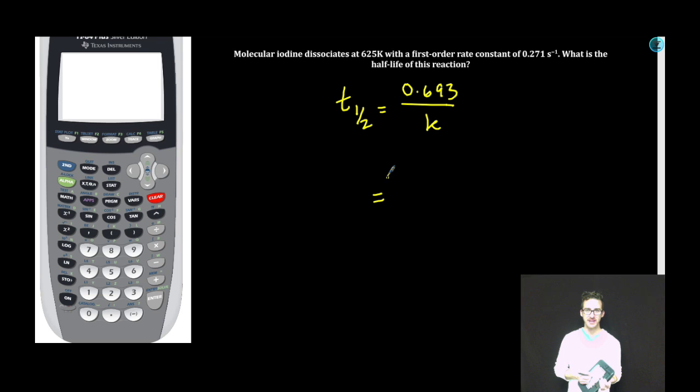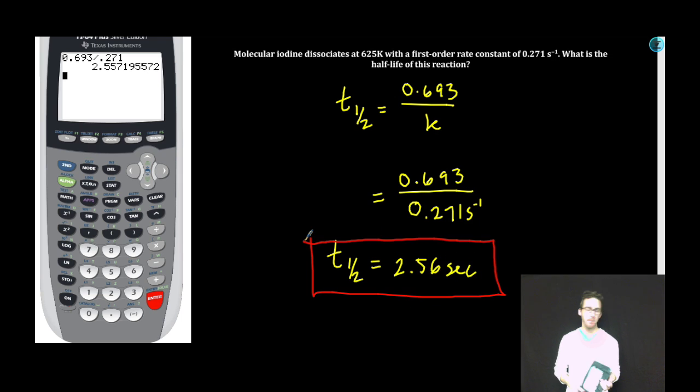Plug it in. Jump to the calculator. 0.693 divided by 0.271. The half-life for this reaction is 2.56 seconds. Boom! Easy!